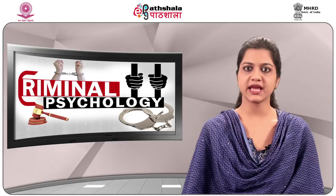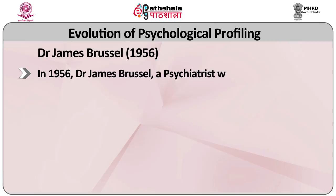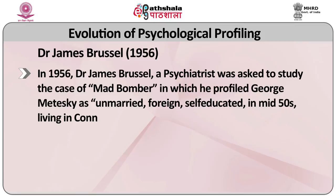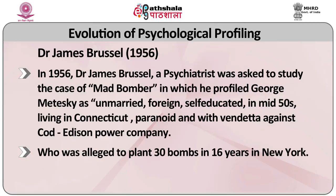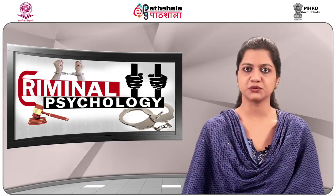The profile of President JF Kennedy was done by Khrushchev. Thereafter, a lot of profiling work was done which mainly relied on intuition and formal studies. In 1956, Dr. James Brussel, a psychiatrist, was asked to study the case of the Mad Bomber, in which he profiled George Metesky as an unmarried, foreign, self-educated man in his mid-50s, living in Connecticut, paranoid and with a vendetta against Con Edison Power Company, who was alleged to have planted 30 bombs in 16 years in New York. This helped the New York police to identify George Metesky and solve the case.